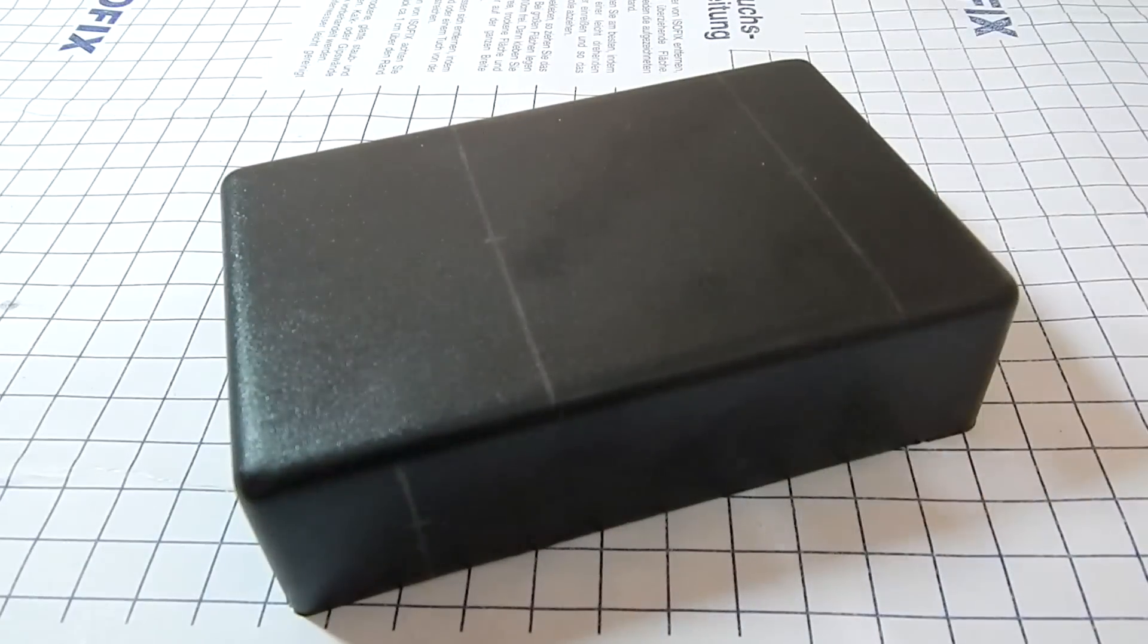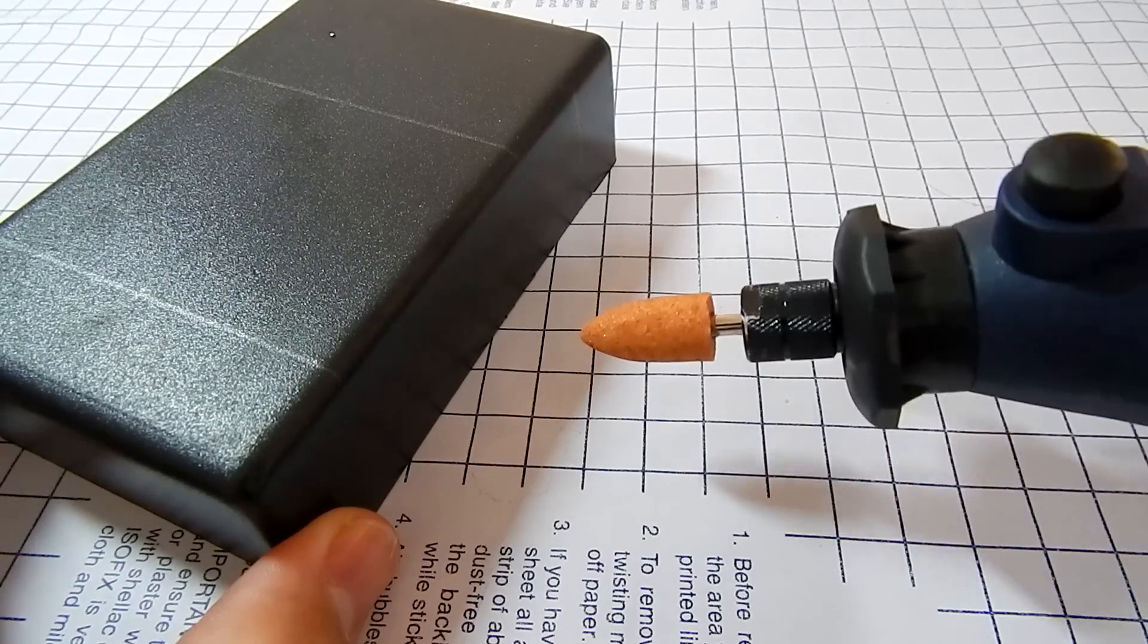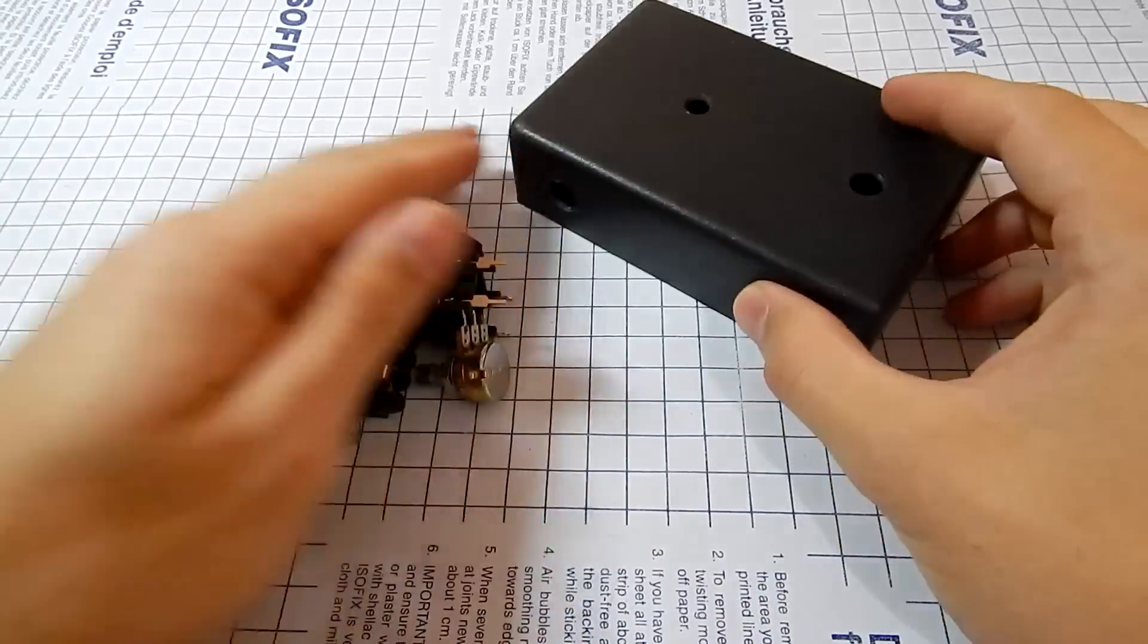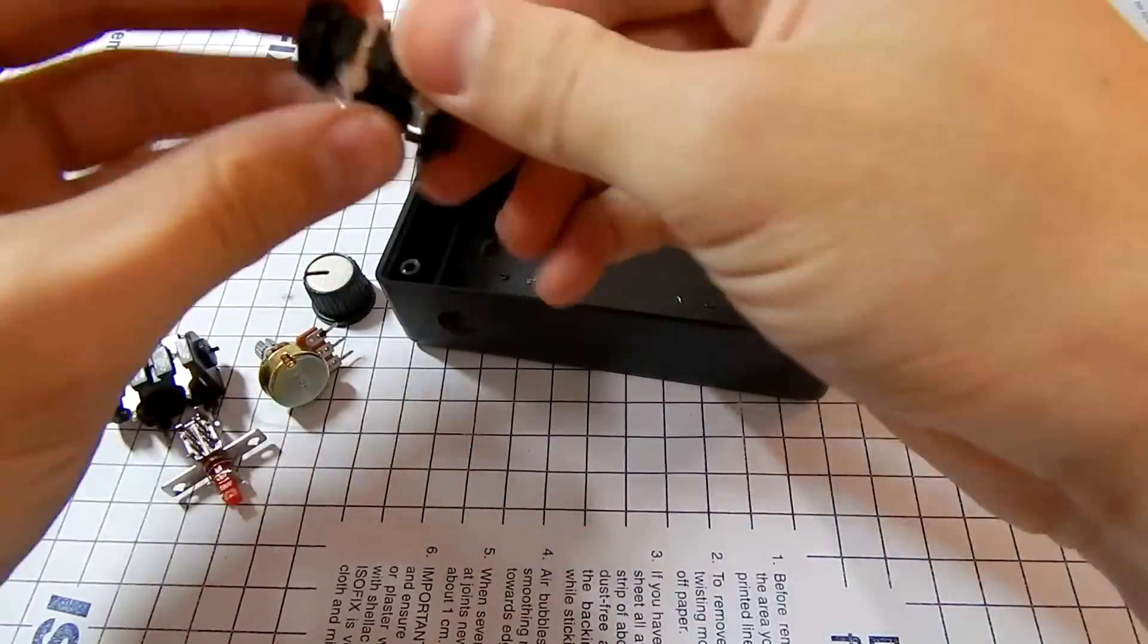We'll make holes in the box according to the measurements on the page. I used a rotary tool, but you can use a drill or even a hot iron. Now let's mount the components.